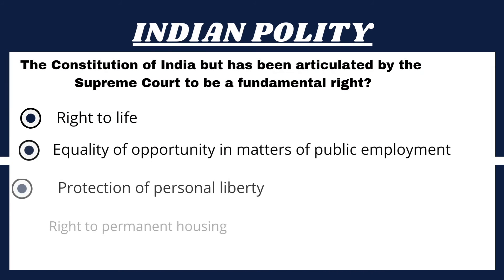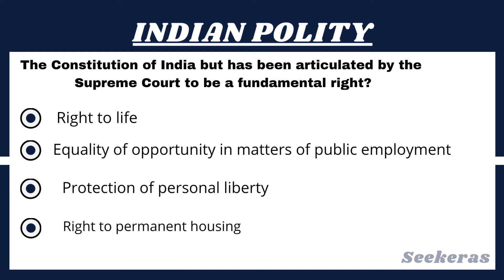Question number 10. Which of the following is not a right enumerated in the Constitution of India but has been articulated by the Supreme Court to be a fundamental right? Option 1, Right to life; Option 2, Equality of opportunity in matters of public employment; Option 3, Protection of personal liberty; or Option 4, Right to permanent housing. The answer is Option 4, Right to permanent housing. In 1985, a five-judge bench of the Supreme Court established in Olga Tellis that the right to life under Article 21 of the Indian Constitution includes the right to livelihood and housing.